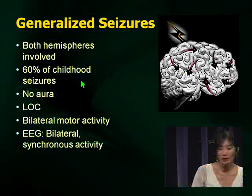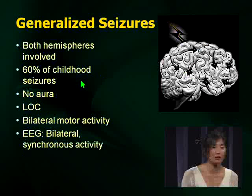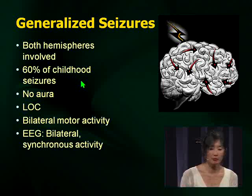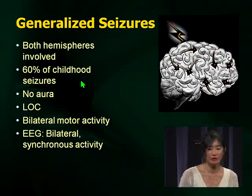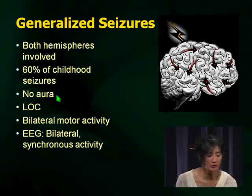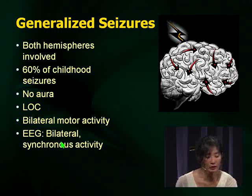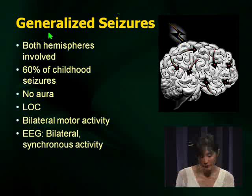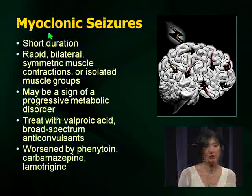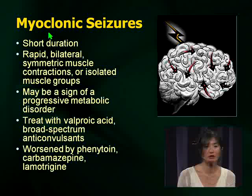Generalized seizures: the category means both hemispheres are involved. There's a category of idiopathic generalized epilepsy representing many developmentally normal kids with seizures. 60% of childhood seizures are generalized. Remember there's no aura, there's loss of consciousness, motor activity is bilateral, and the EEG shows bilateral activity. One very important category of generalized seizures is myoclonic seizures — a red flag to potential metabolic problems. They're short, rapid, bilateral, symmetric muscle contractions or isolated muscle groups. They may be a sign of a progressive metabolic disorder.